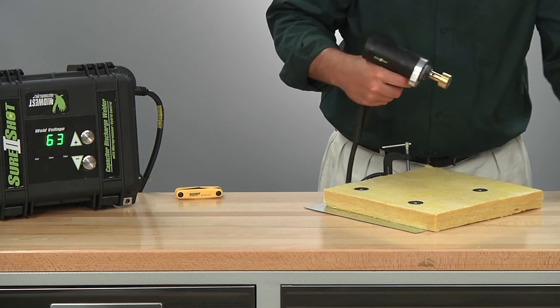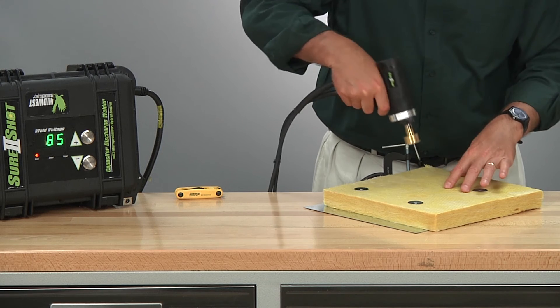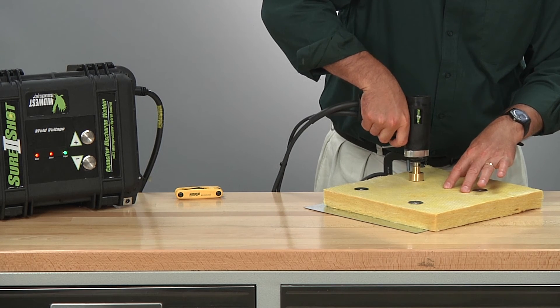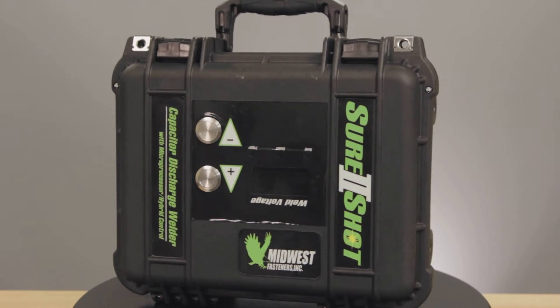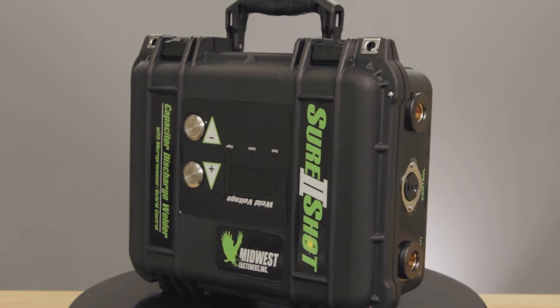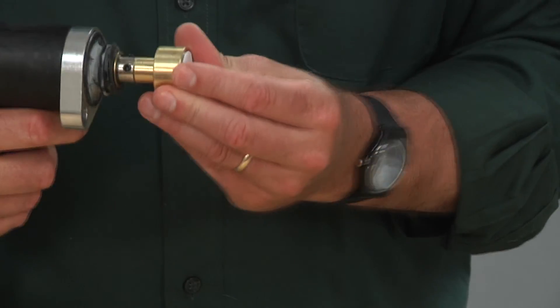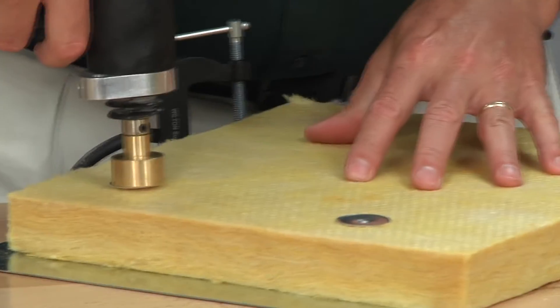Since the CD process can deliver fifteen to twenty welds per minute, material is installed quickly and cleanly. CD 110 volt systems can weld as quickly as you load, contact, and apply.